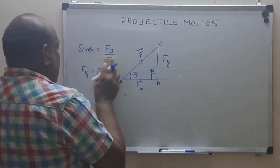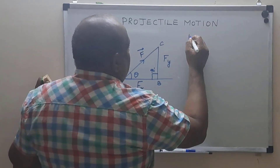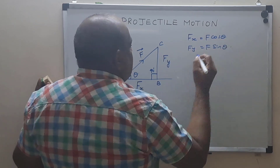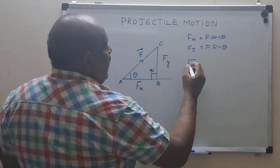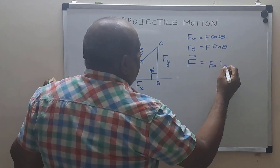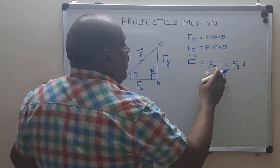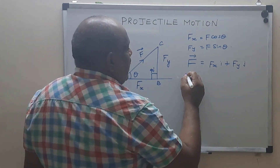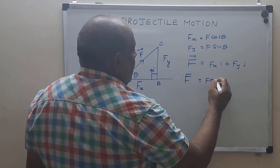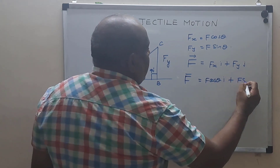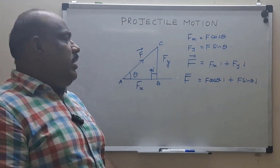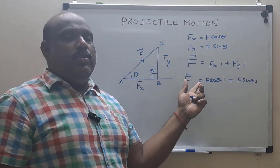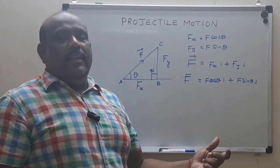So Fx = F cos theta and Fy = F sin theta. In vector form, F vector equals Fx·i plus Fy·j, where i is along the x direction and j is along the y direction. So F = F cos theta·i + F sin theta·j. The total result of velocity or resultant force equals the summation of its horizontal and vertical components.